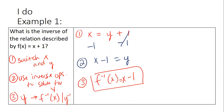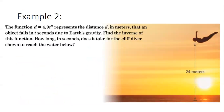So because we're in algebra two — that was algebra one — in algebra two we're going to focus on functions besides linear, and we're going to incorporate more word problems into finding the inverse. The function d = 4.9t² represents the distance d in meters that an object falls in t seconds due to earth's gravity. Find the inverse of this function. The inverse is going to allow me to get time by itself.